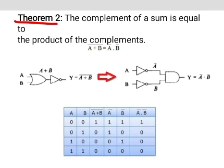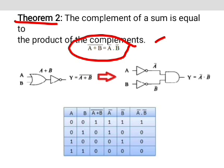Theorem 2 states that the complement of a sum is equal to the product of the complements. In equation form, A plus B whole complement equals A complement into B complement. This is illustrated by the gate equivalency and also in the truth table, as shown in the figure.